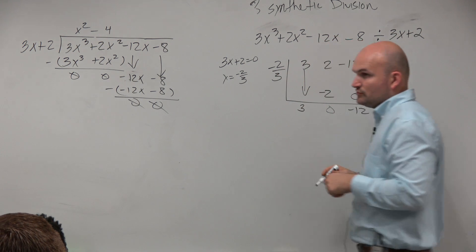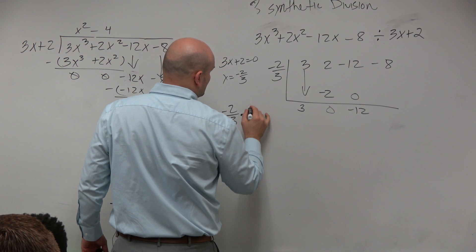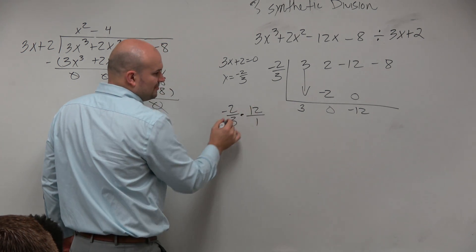And then negative 12 times negative 2 thirds, well, again, that's really like this. It's not that bad. You can simplify this.